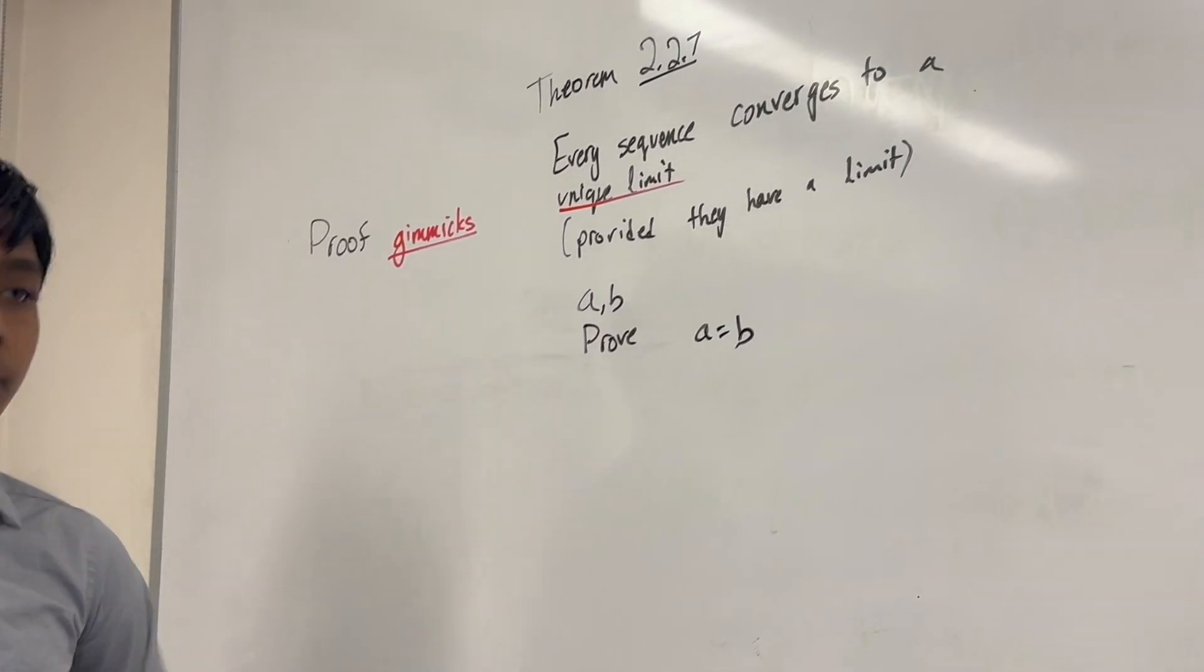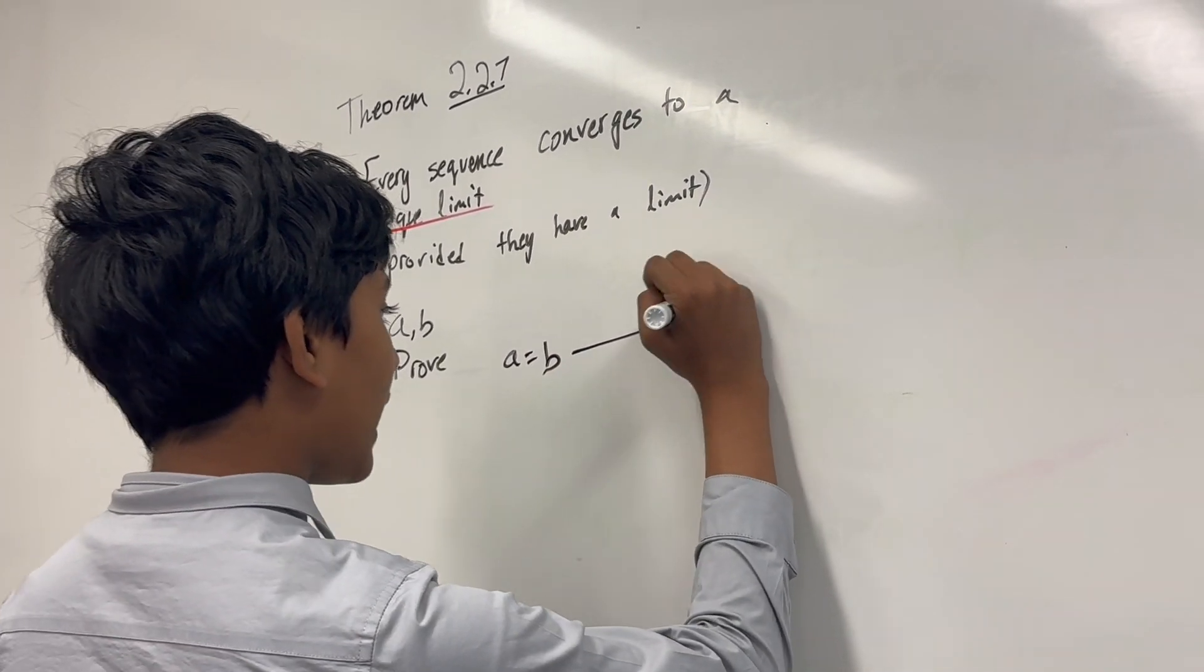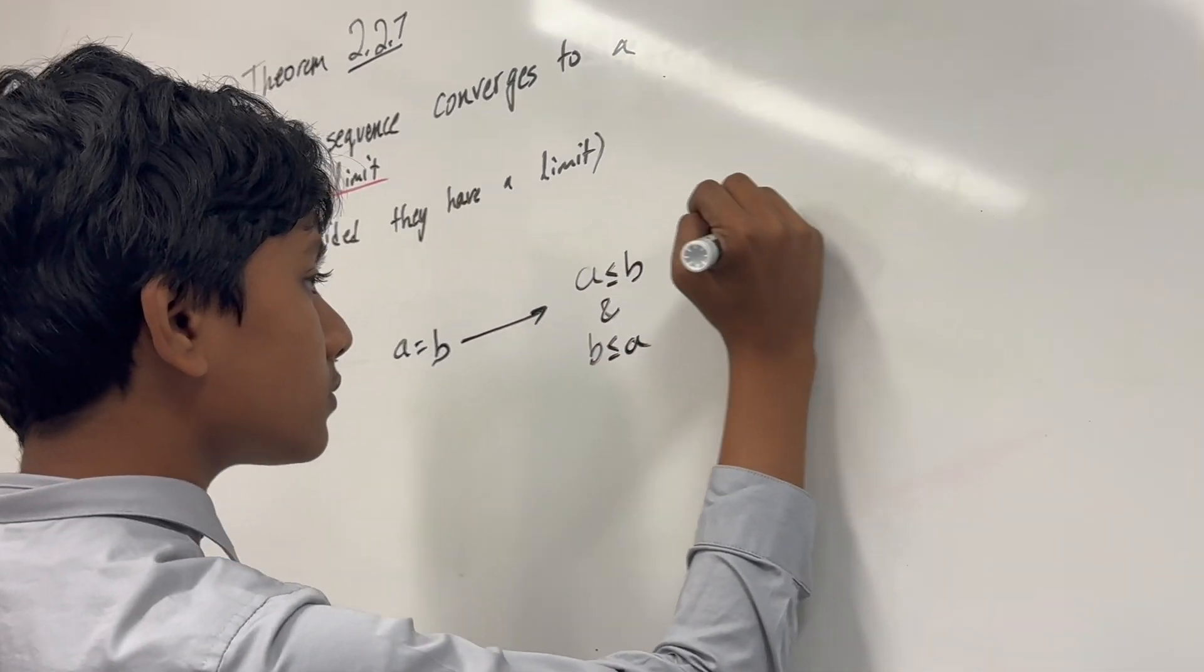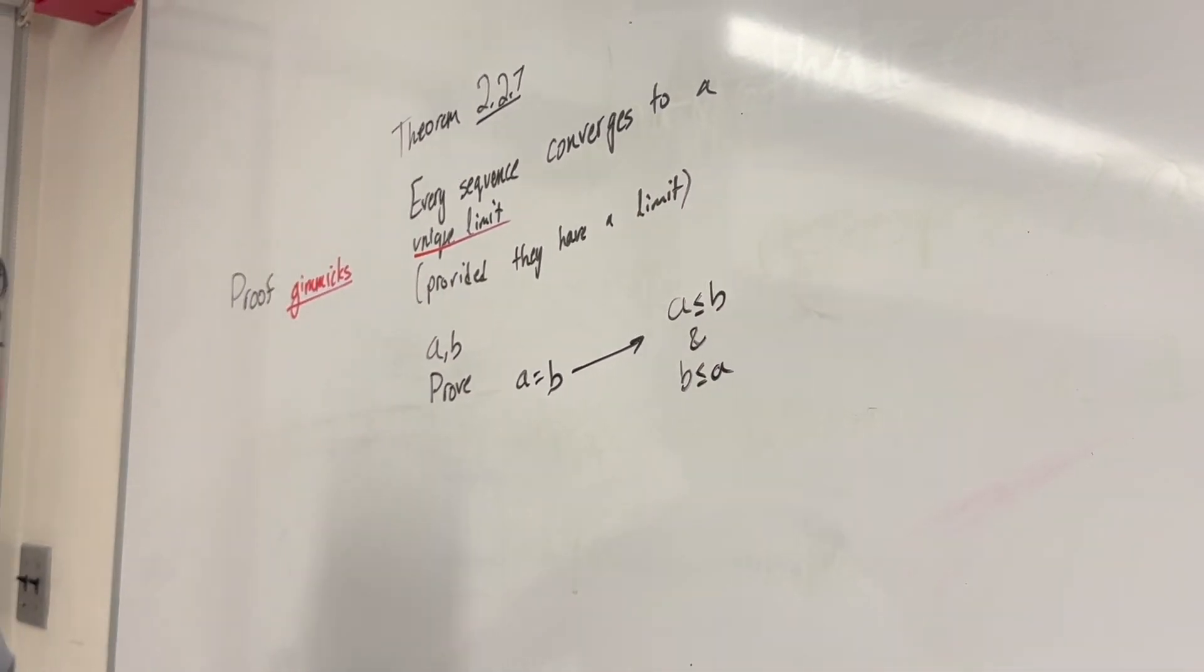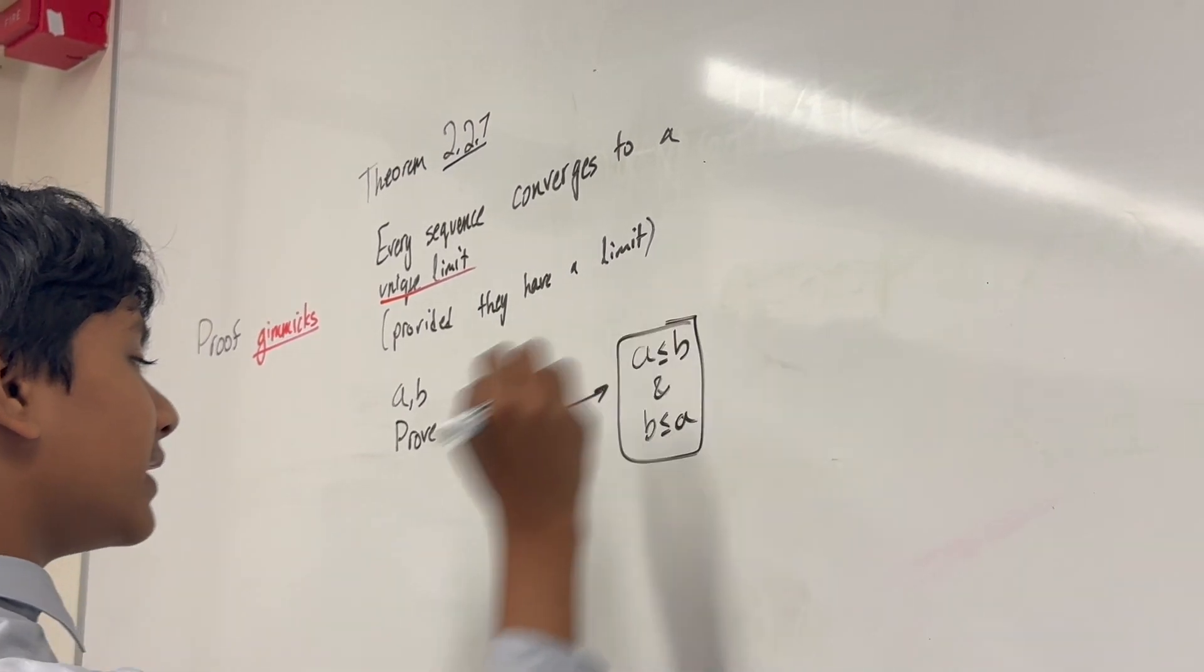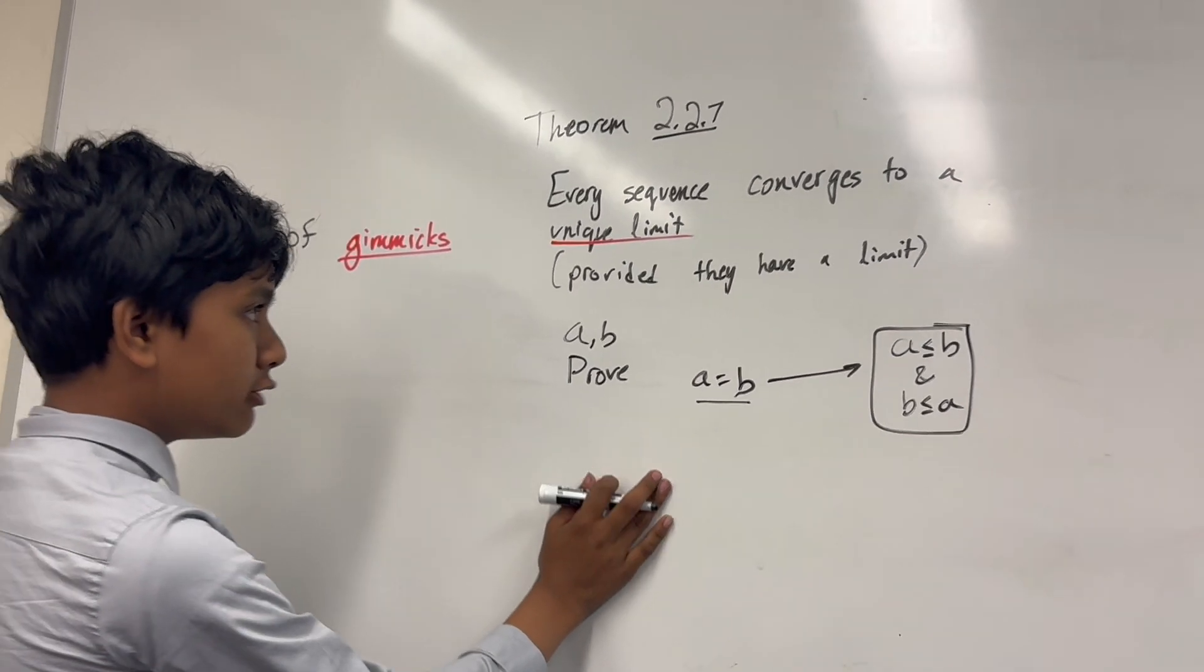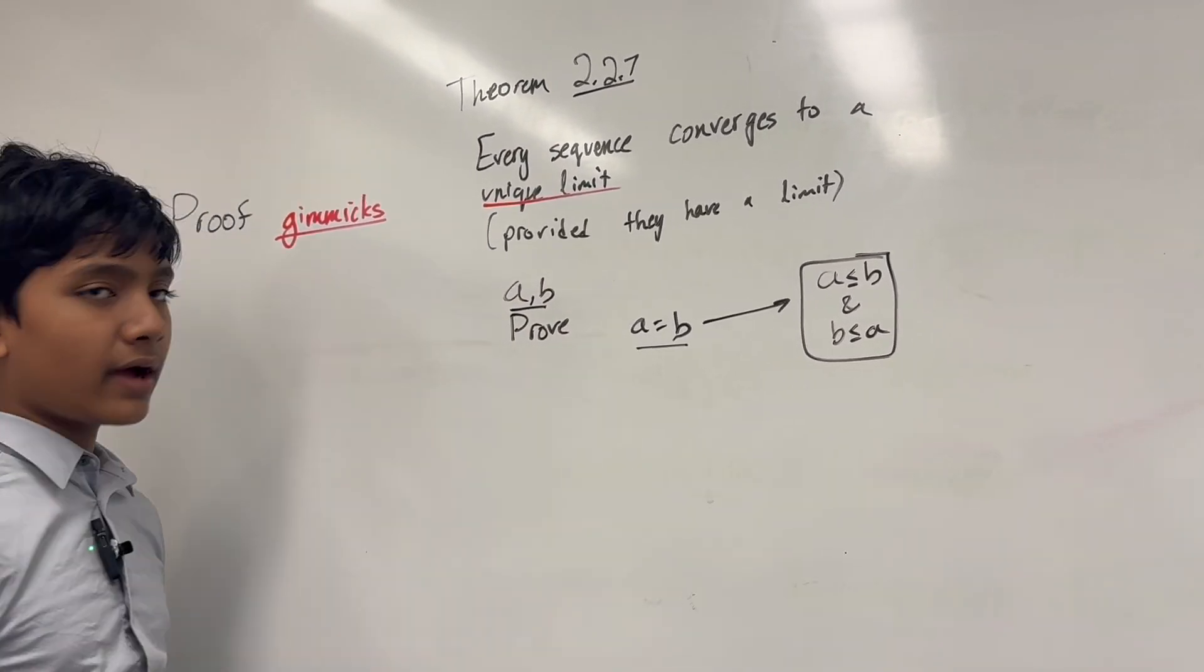And, here comes the first part of our gimmicks. A is equal to B if A is less than or equal to B, and B is less than or equal to A, or the other way around, which is basically the same exact thing. So, this is going to be a very central principle. Prove A is equal to B if A and B are two of the limits of our sequence.